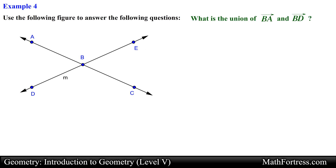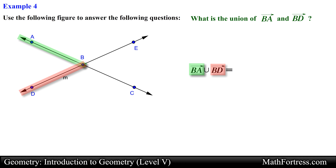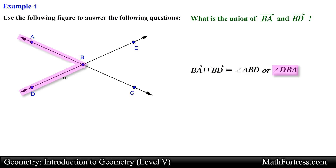Let's try the next example: what is the union of ray BA and ray BD? Using set notation this translates to ray BA union ray BD. First let's locate each of the rays — ray BA is located here and ray BD is located here. You can think of the union as the merger between these two rays; we want to include all the points on ray BA or BD or in both. Recall that an angle is formed when two rays have a common point of intersection called the vertex. Therefore the union of ray BA and ray BD is equal to angle ABD or angle DBA.